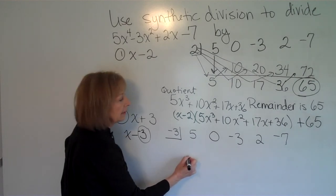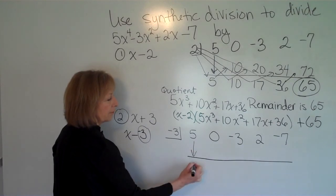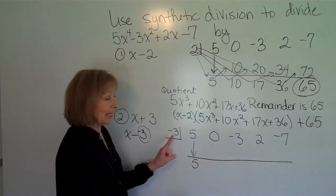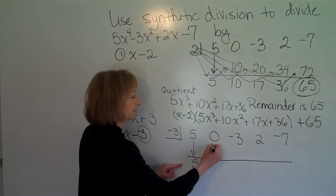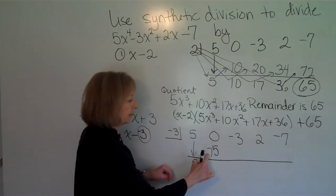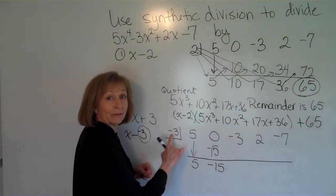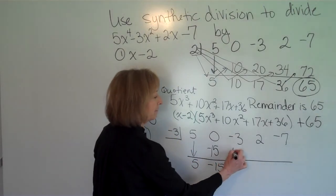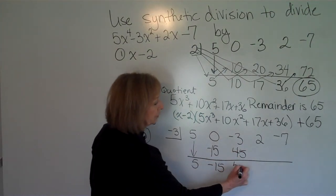Drop down a line, draw your horizontal bar. The first number comes straight down without doing anything to it. Then we multiply: -3 times 5 is -15. And then we add: 0 plus -15 is -15. Multiply: -3 times -15 is positive 45. And then we add: -3 plus 45 is 42.